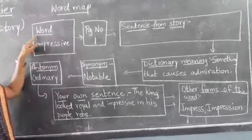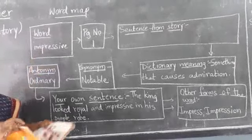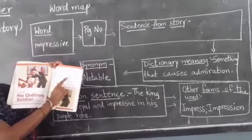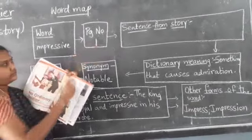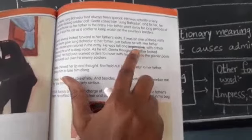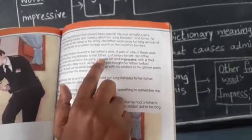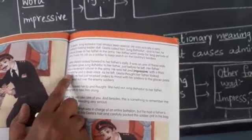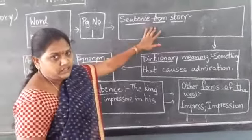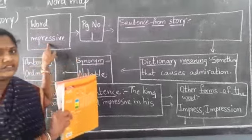Here I take the word 'impressive.' If you open the reader, this is the first page of the lesson. In which page of the lesson do you have it? Page 1. You have to search where the word 'impressive' is. Can you see it here? Yes. In the third column of the word map, you are going to write this sentence: 'He was tall and impressive with a thick mustache and a deep voice.' This sentence you are going to write in the section headed 'sentence from story' — where this word is used in the reader.